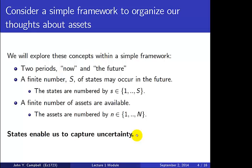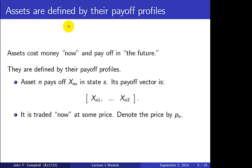What defines an asset? Assets cost money now — you have to buy them now — and they pay off in the future. You get some payment back, but that payment is random because it depends on what state occurs. So assets are defined by their payoff profiles across the possible states. For notation, asset n pays off an amount x subscript n,s in state s.